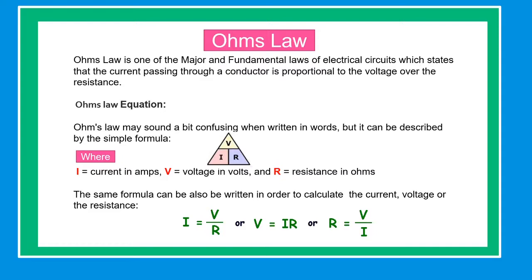Ohm's Law may sound a bit confusing when written in words, but it can be described by a simple formula where I equals current in amps, V equals voltage in volts, and R equals resistance in ohms. The same formula can also be written in order to calculate the current, voltage, or resistance.